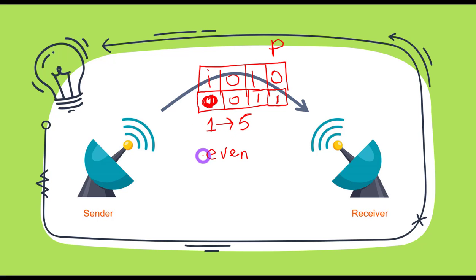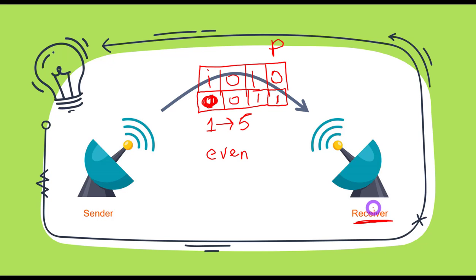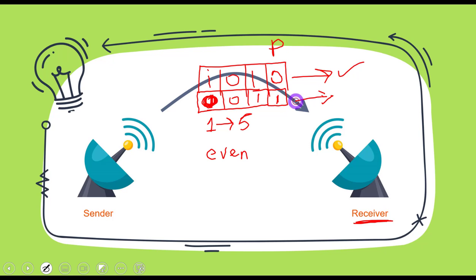Once we do that, on the receiving end, when the receiver receives that message, it knows that we are using even parity — we keep that while designing the system. So it knows the message received must have even parity: the number of ones should be even. It checks the number of ones and whether they are even or not. If they are even, it will say there is no error in this message.